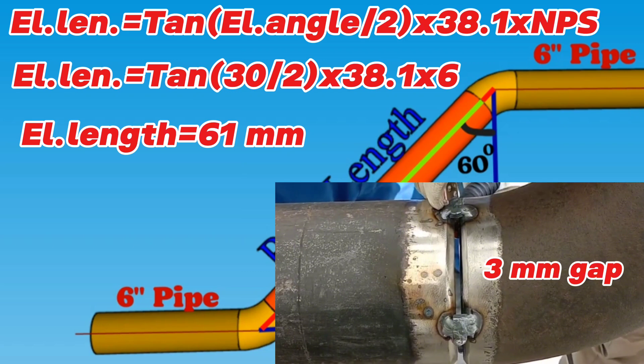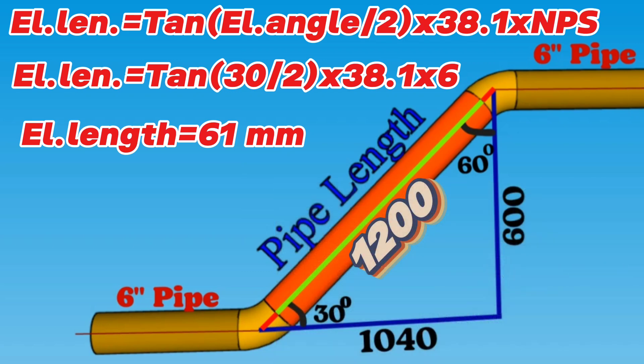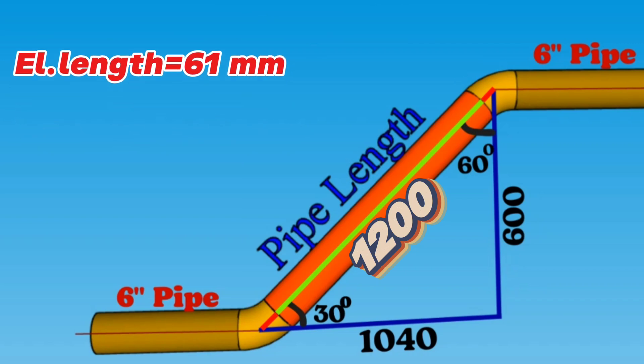Let's start to calculate this red pipe section length now. If we subtract the lengths of the two pieces 30-degree cut elbows and the gaps for welding from the total length, we can find the red pipe section length.